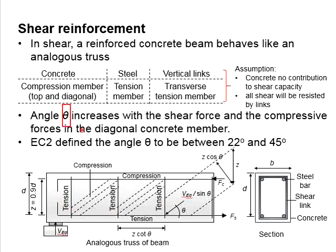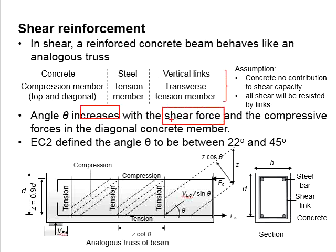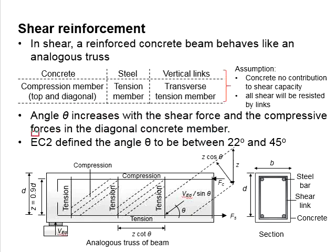There is an angle indicating the gradient of the compressive strut in the concrete. The angle increases with the magnitude of the shear force and the compressive force in the diagonal concrete member. According to Eurocode, it ranges between 22 degrees and 45 degrees.